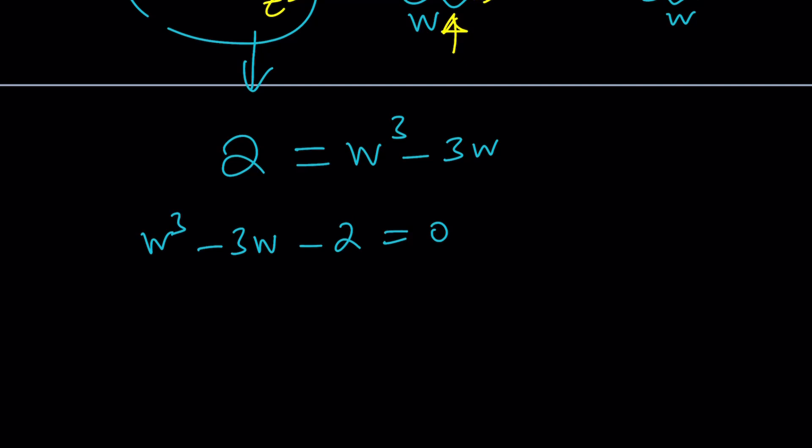1 plus negative 3 gives me negative 2, which is this coefficient. So it satisfies the odds equals evens, which means negative 1 is a solution. You should definitely know that, right? Two important pieces of information regarding polynomials.